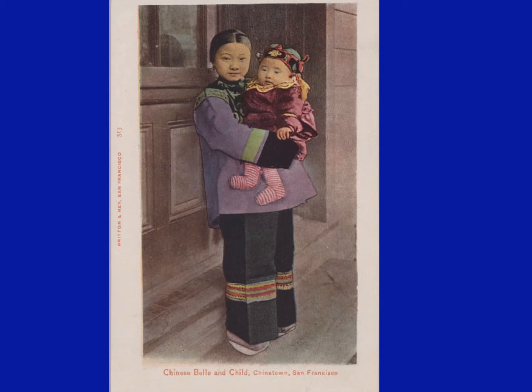Here is an example of what could be a primary source — an illustration of a young lady, a Chinese bell, and a child in Chinatown in San Francisco.